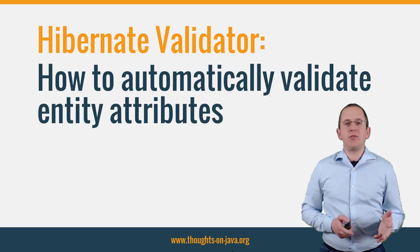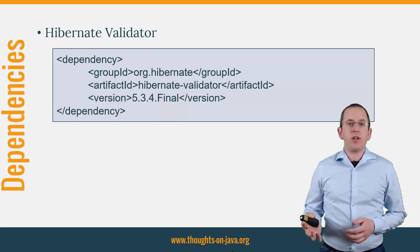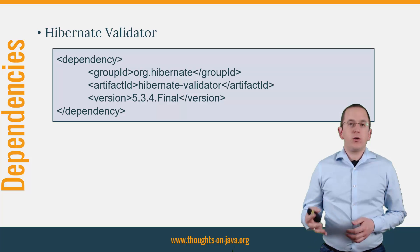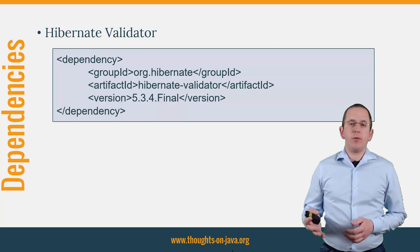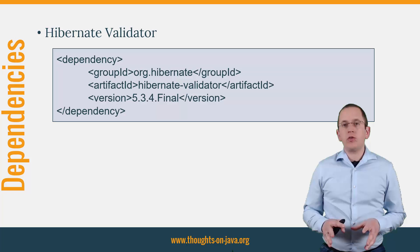Let me give you a quick overview of what you can do. Hibernate and all other JPA2 implementations use Bean Validation by default. You just have to add it to the class path of your application. The code snippet shows the Maven dependency for Hibernate Validator, the Bean Validation reference implementation. It transitively also adds the Bean Validation API.